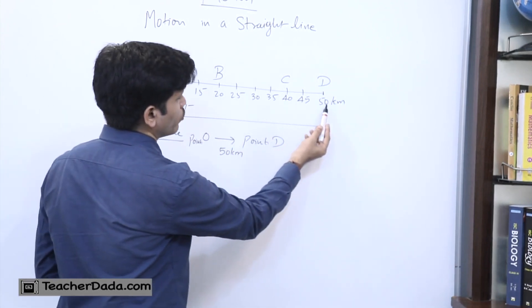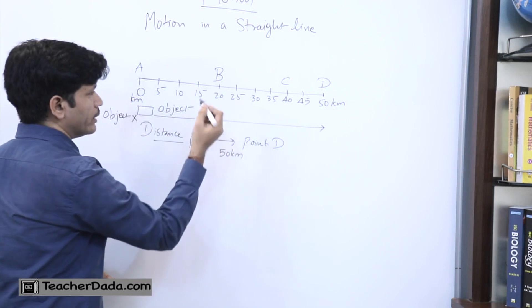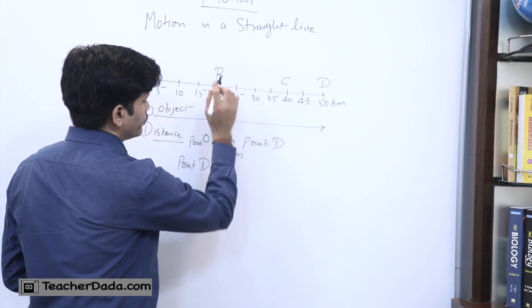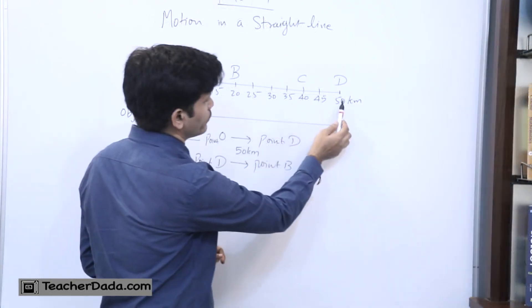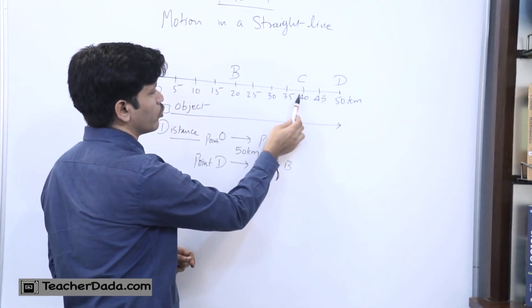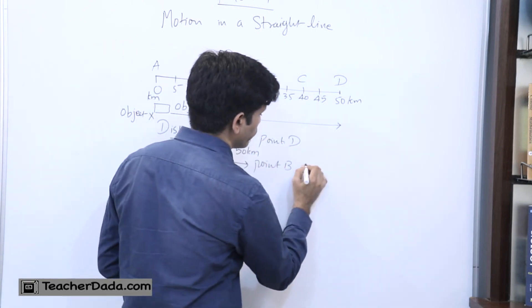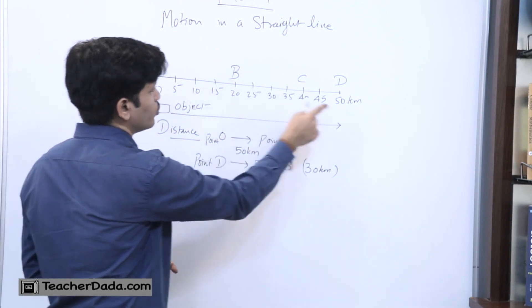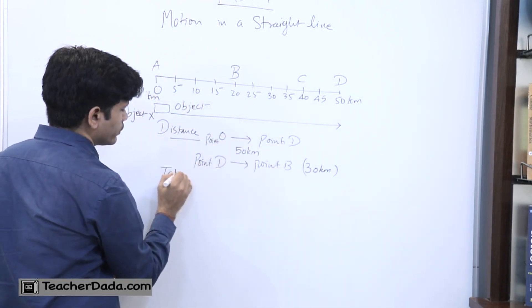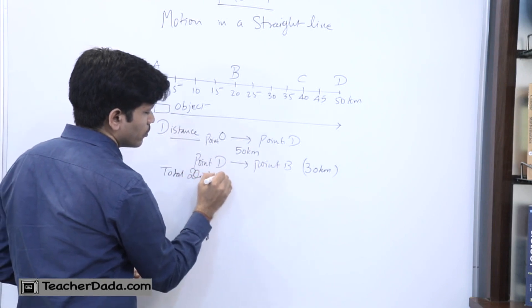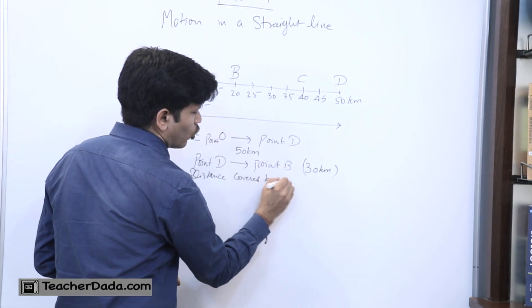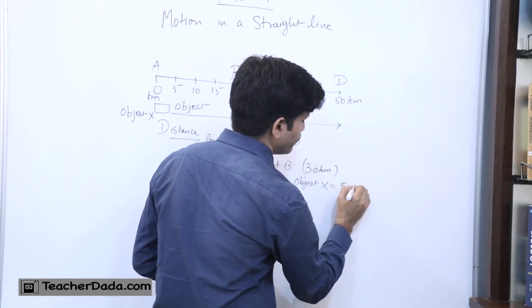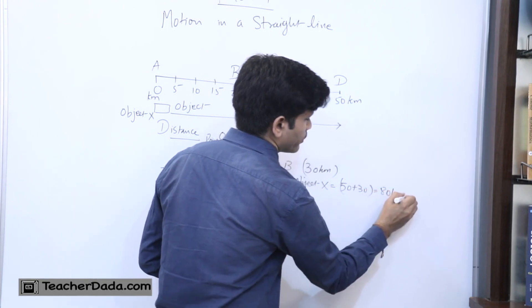Now, if the object is coming back from 50 kilometres - that is point D - and it is coming till point B at 20 kilometres, the total distance travelled from point D to B is 30 kilometres. So the total distance covered by object X from A to D and then D to B is 50 plus 30 kilometres, which equals 80 kilometres total distance.